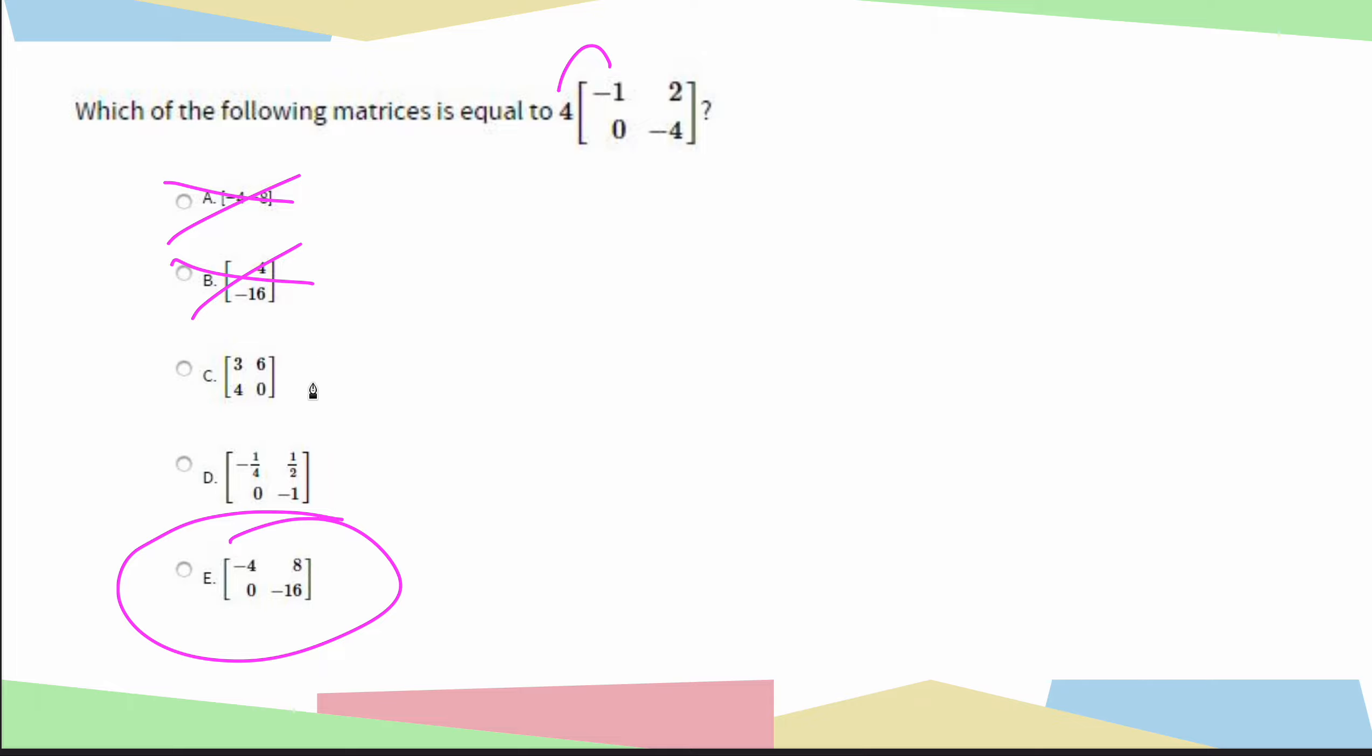A quick note, something else we can talk about briefly is why the other answer choices are incorrect. If you notice this one, how they got all of these answer choices was they actually added these instead. So like 4 minus 1 is 3, that's incorrect. 4 plus 2 is 6, that's incorrect.